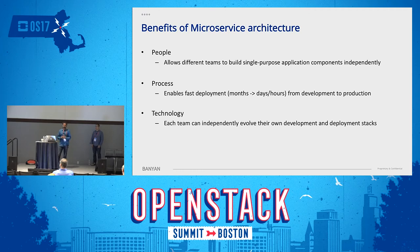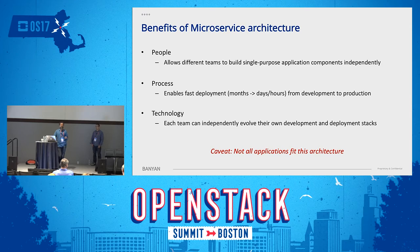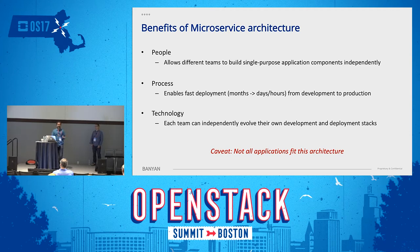On the technology side, each team can choose their own language, their own development framework, and their own deployment framework, and really focus on making it good for that particular component. Not all applications fit this architecture — things like closely coupled applications or those with strict latency requirements aren't extremely well suited. But it is gaining a lot of momentum. OpenStack itself is an example of microservices at many levels, with Neutron, Barbican, Firewall-as-a-Service, and so on — different components developed independently that all interact with each other.